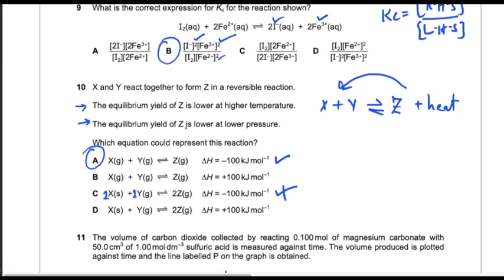Option A is correct because when you decrease the pressure, the volume of gas increases. To increase the volume, the reaction moves towards the side with more moles of gas. In option A, the reactant side has two moles which is more than the product side, so decreasing pressure shifts equilibrium towards reactants, lowering yield of Z. I hope you liked this video and will share it with your friends. Goodbye.